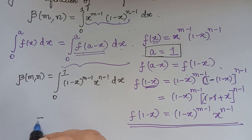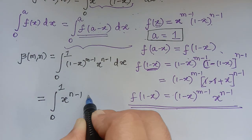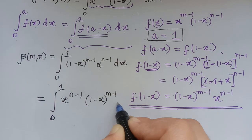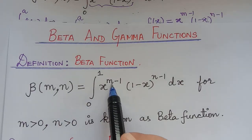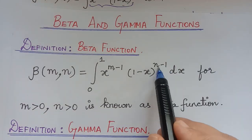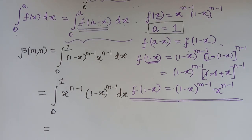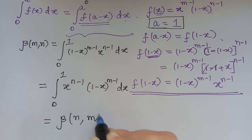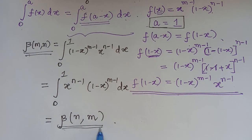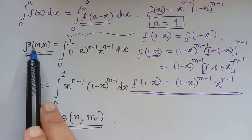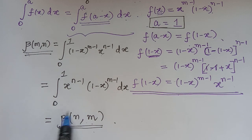Rewriting this integral in the form of the beta function, we have integral 0 to 1 of x to the power n minus 1 multiplied with 1 minus x to the power m minus 1 dx. We see that this is a beta integral where m and n are flipped — instead of m we have n, and instead of n we have m. So this integral is nothing but beta of n, m. Therefore we have proved that beta of m, n is equal to beta of n, m, which completes the proof of Property 5.